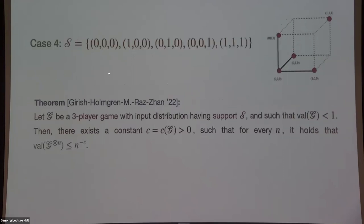The last case, which is one of the most interesting, has five points: (0,0,0), the three weight-one points, and (1,1,1). This is four connected points plus one isolated point — a big connected component with just one isolated vertex. Following the earlier argument from Dinur et al., this graph is not connected, so that theorem doesn't apply. But we are able to prove polynomial decay, and we can prove it for something much more general.